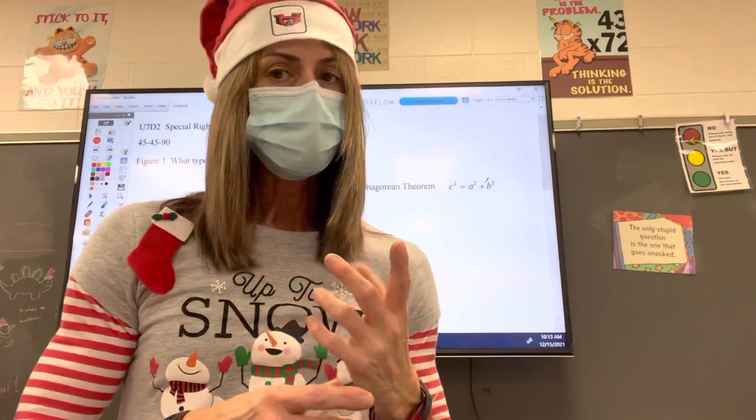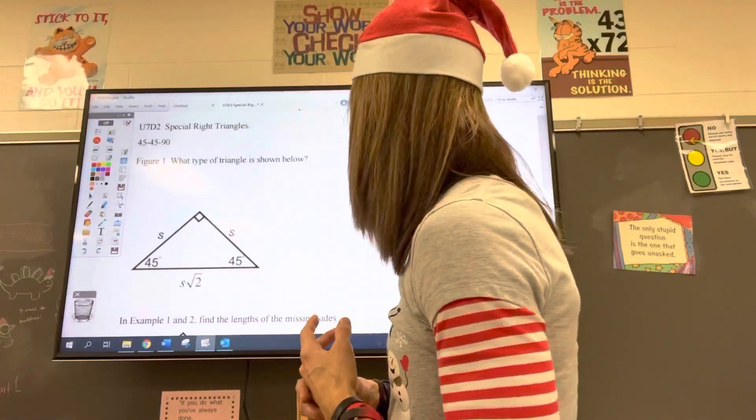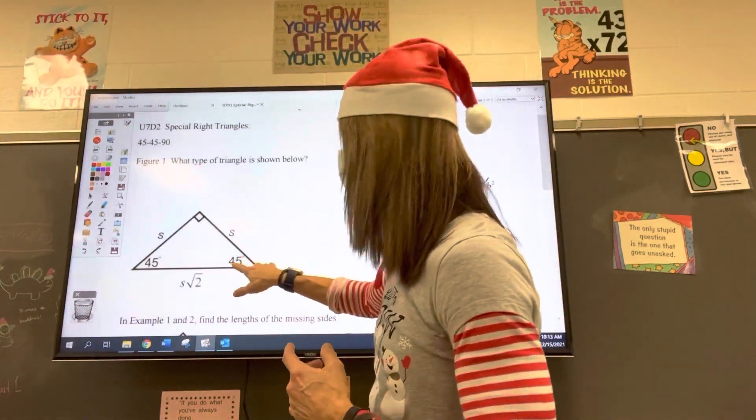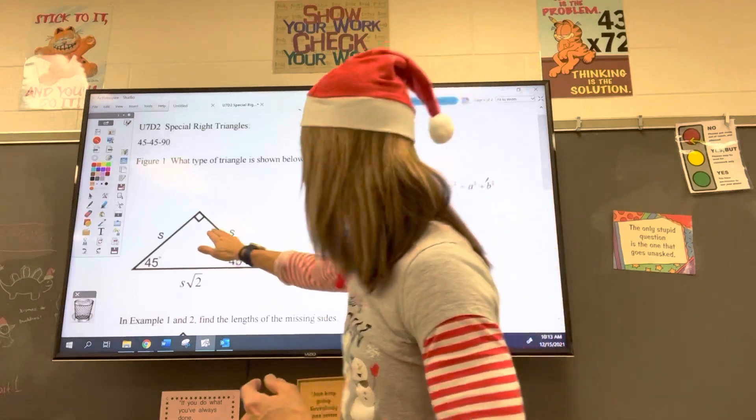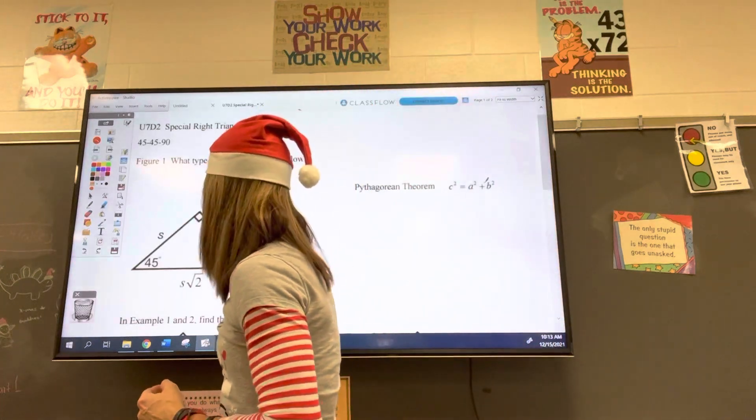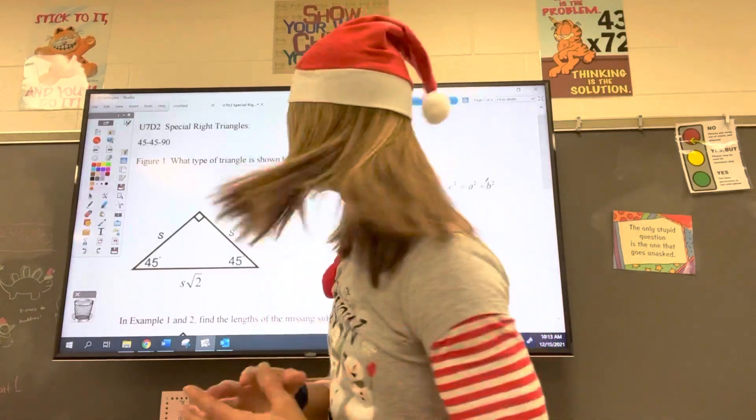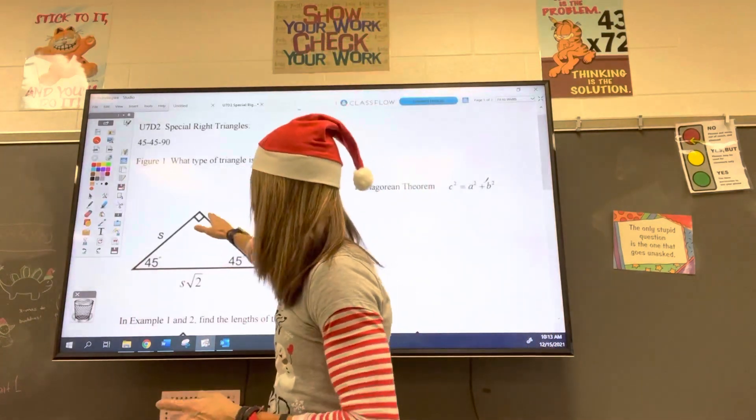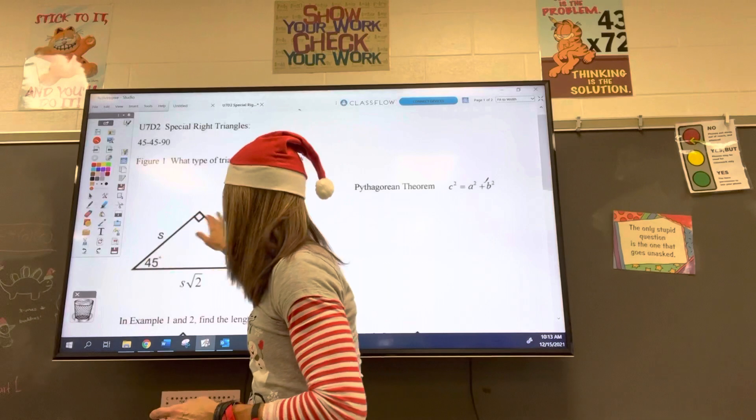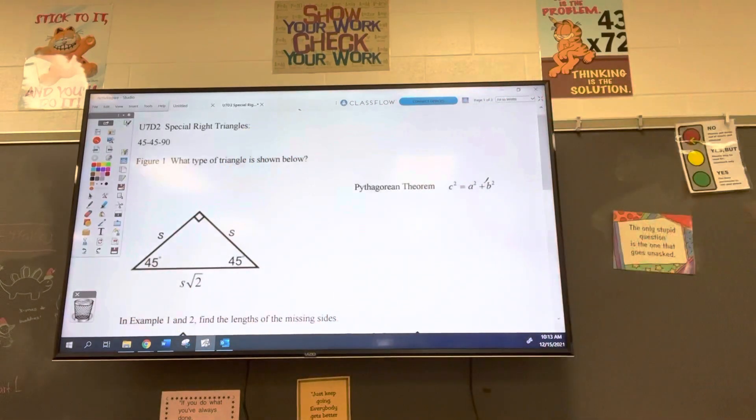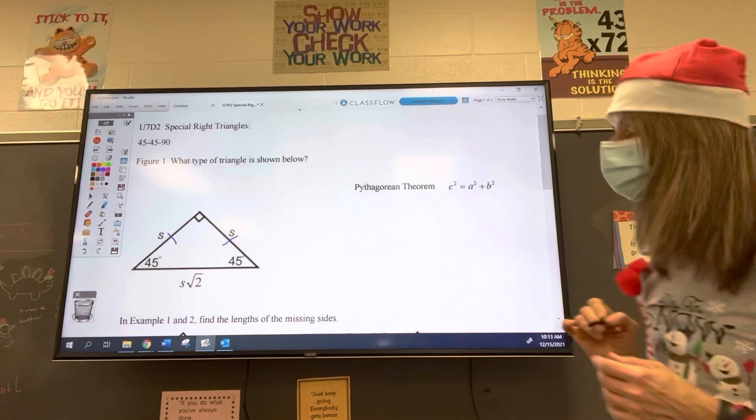So today we're going to start with what type of triangle is shown below. So this is an isosceles triangle right here. We've got two sides of the same length, and I may just put an S next to them, and this worksheet is going to be attached. The relationship between the lengths of these two sides that are congruent, and sometimes they'll show you that by putting a little mark like this.